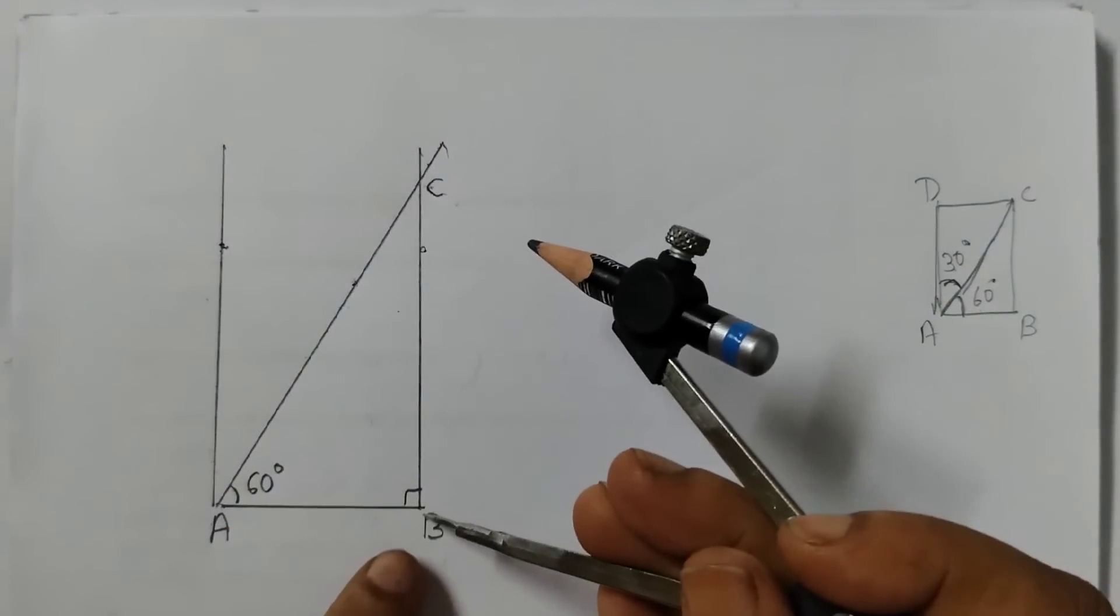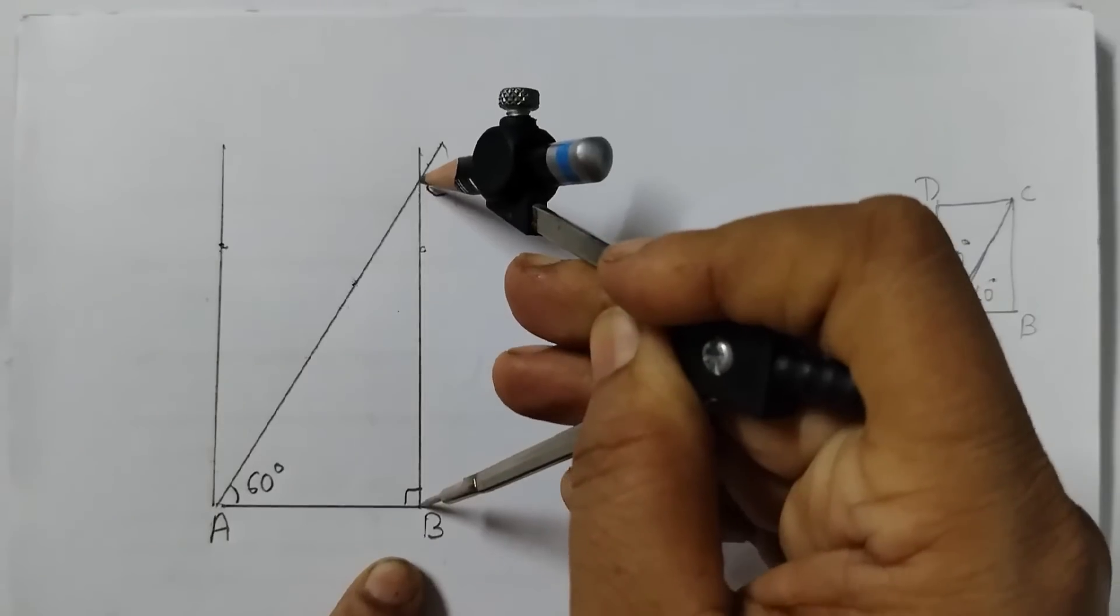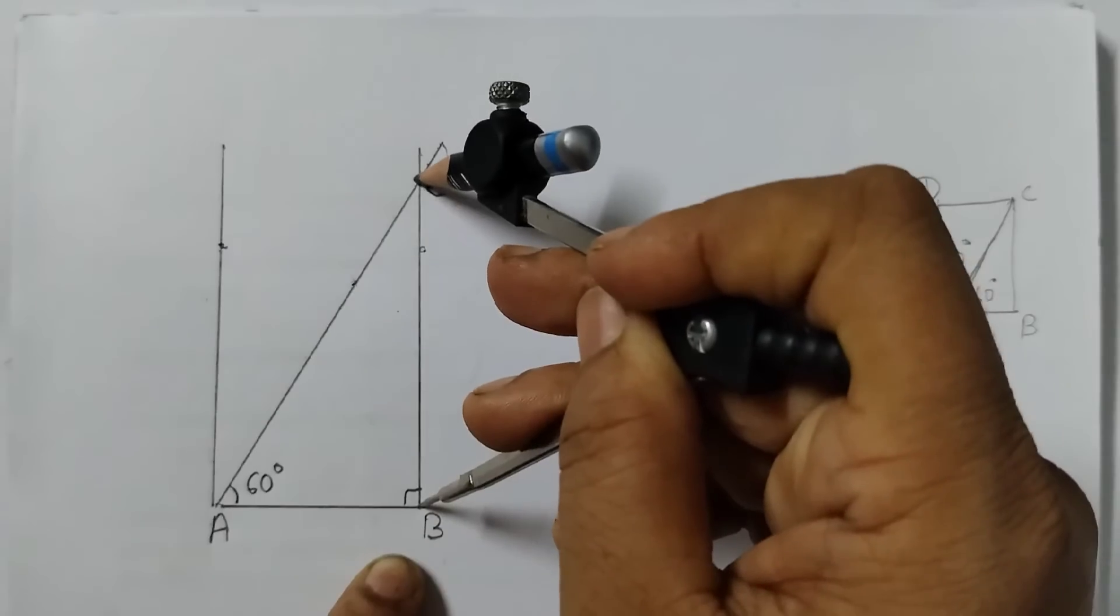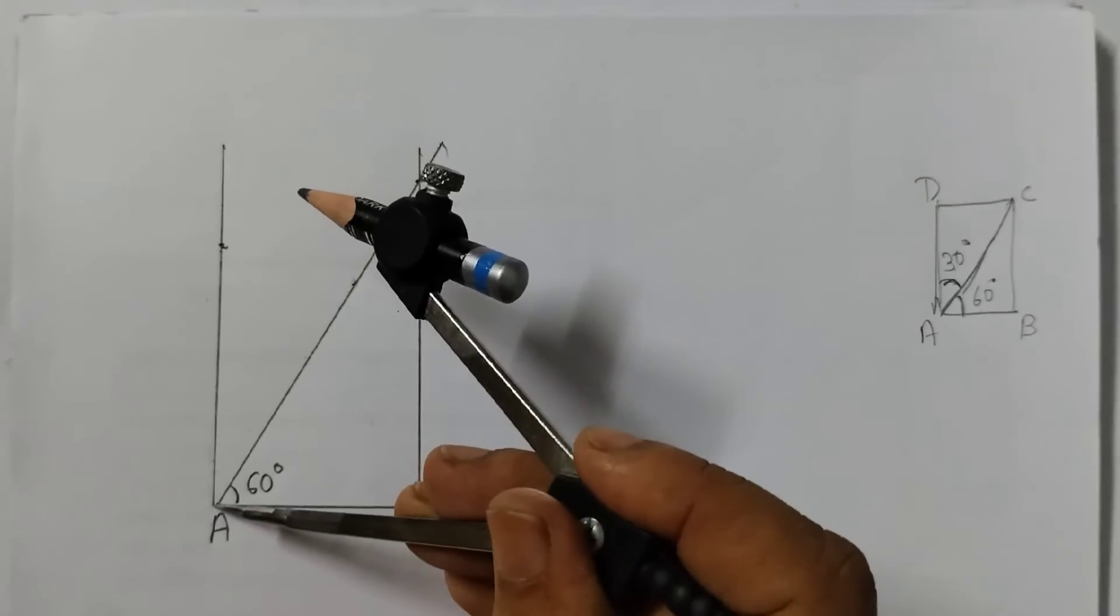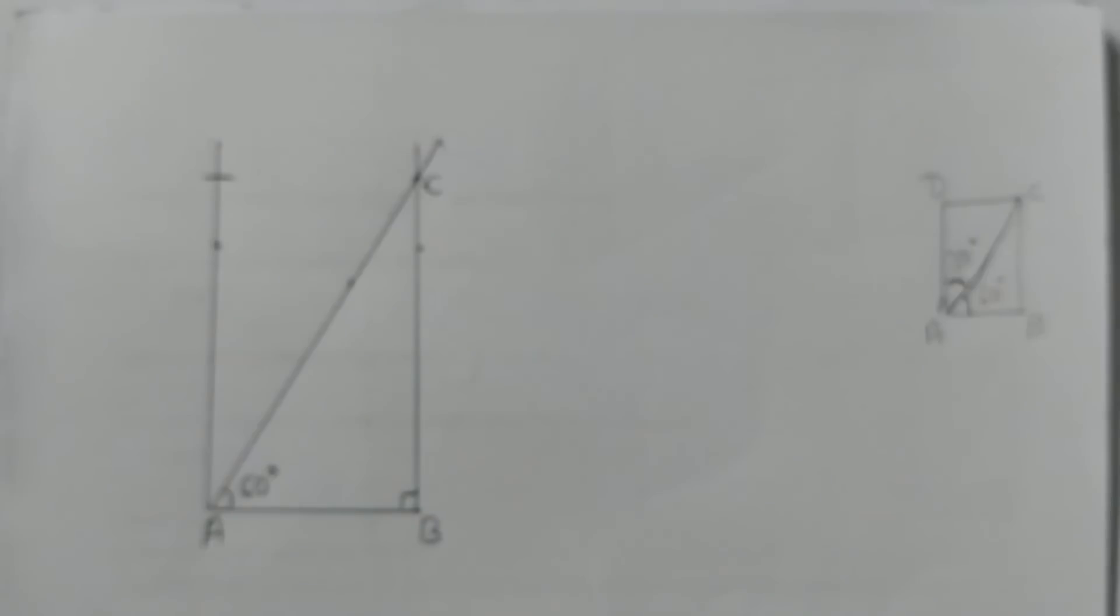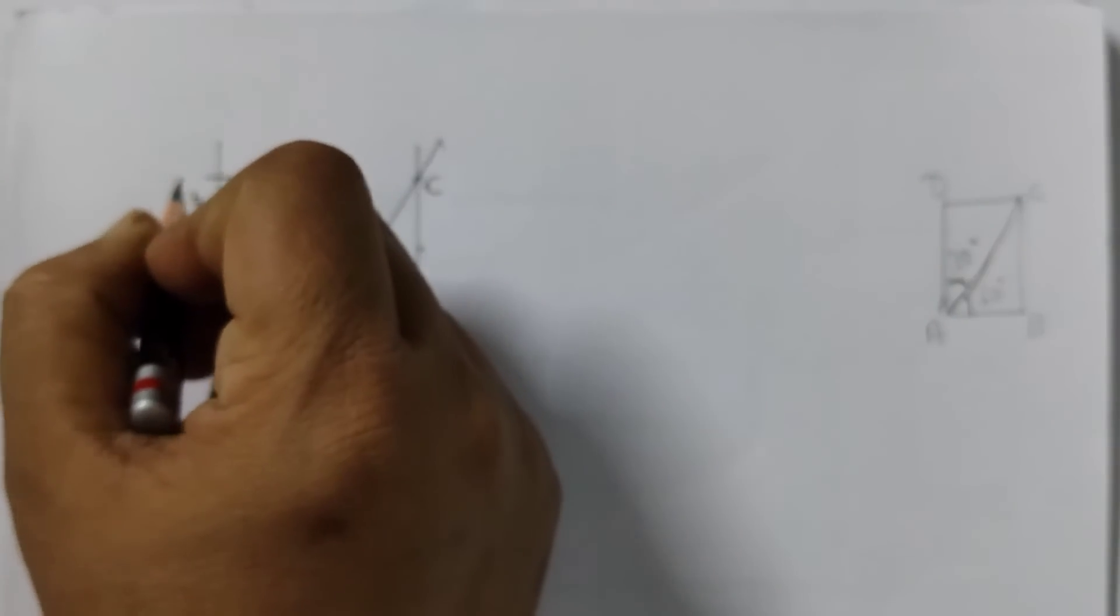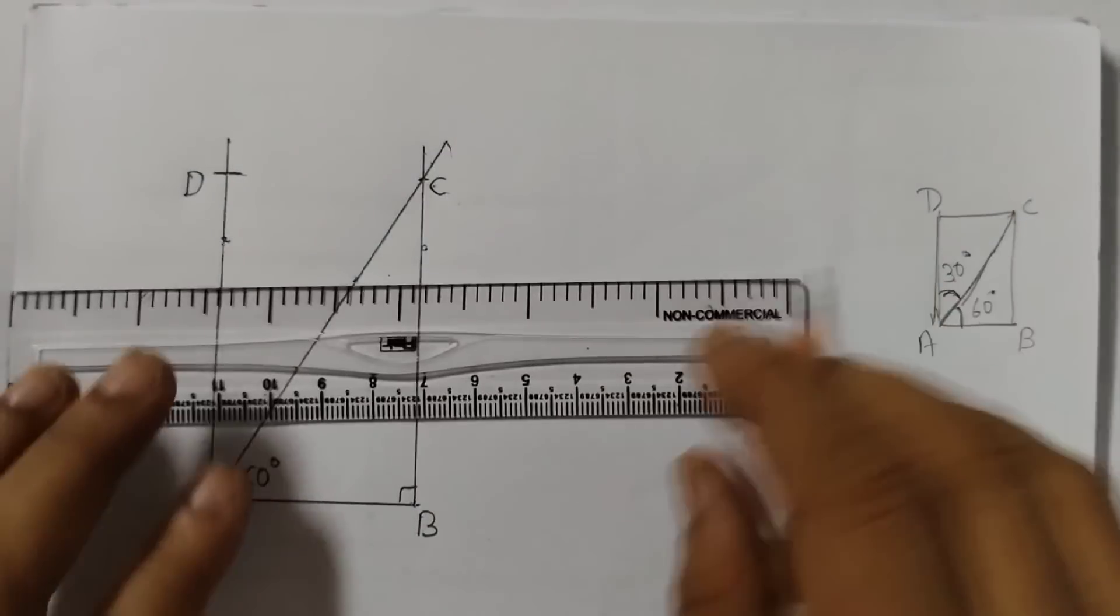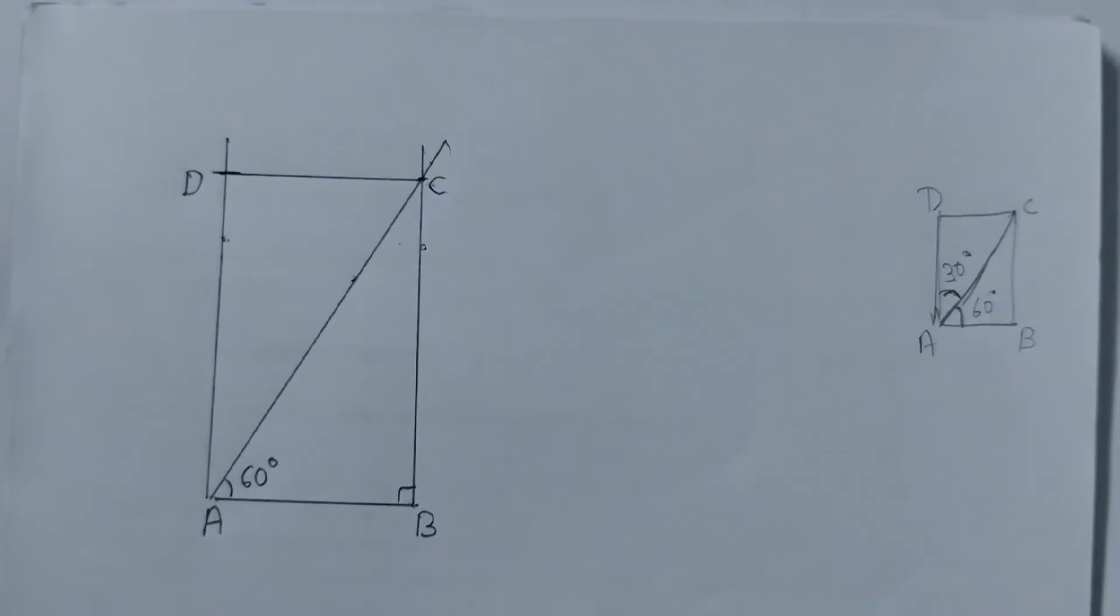And place the metal point here and the pencil point here. Metal point at B and pencil point at C. Same measurement. Put the metal point at A and cut an arc like this. This point is D. This point is D. Now join CD.